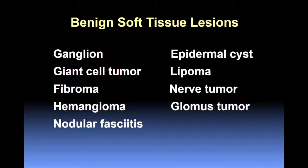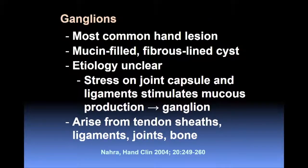There are several different kinds of lesions, and we're not going to have time to talk about all of them. But as you can see from this list, this includes both solid and cystic lesions. The most common hand lesion you're going to run into is a ganglion. These are mucin-filled fibrous-lined cysts. The etiology isn't fully known, but it's often been purported that stress on a joint capsule or ligament stimulates mucus production and leads to the formation of a ganglion.